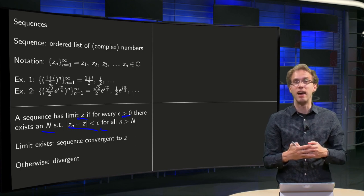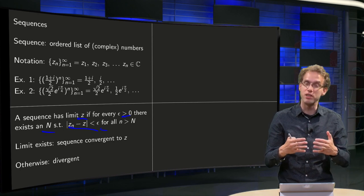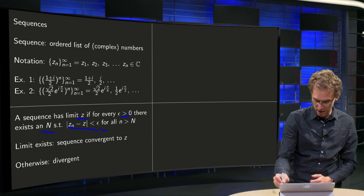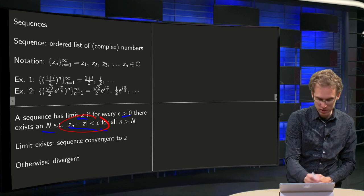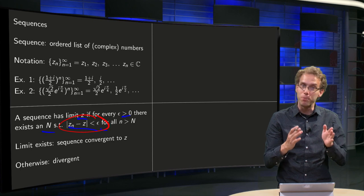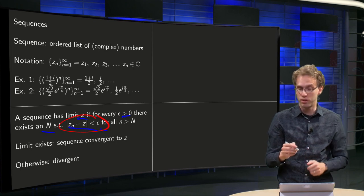This is exactly the same as for sequences of real numbers. The only difference is in here, the interpretation of this norm. For real numbers it is the absolute value, and for complex numbers it is the norm of the difference.